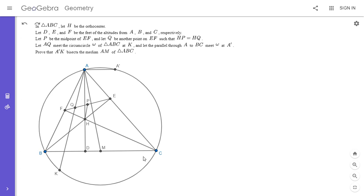So we have a triangle ABC. H is the orthocenter. D, E, and F are the feet of the altitudes from A, B, and C. We then let P be the midpoint of EF, and Q is another point on EF, such that HP is equal to HQ. AQ meets the circumcircle of ABC at K.